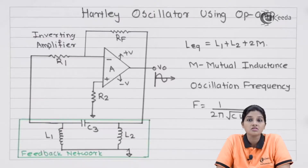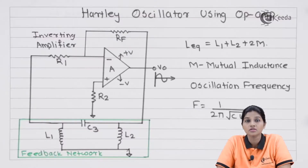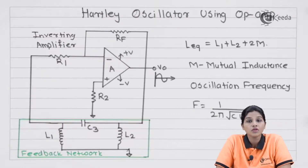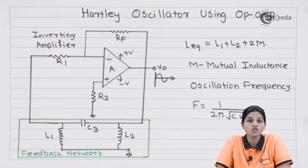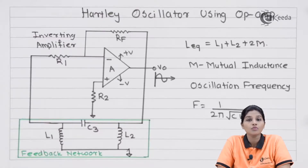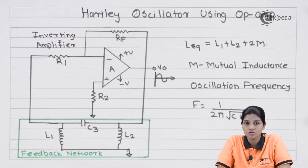The Hartley oscillator is considered as one of the LC oscillators. In case of LC oscillators, a tank circuit — a parallel combination of capacitor and inductor — is used as a feedback circuit. When we use an op-amp in inverting configuration, the op-amp introduces a phase shift of 180 degrees between the input and output signal.